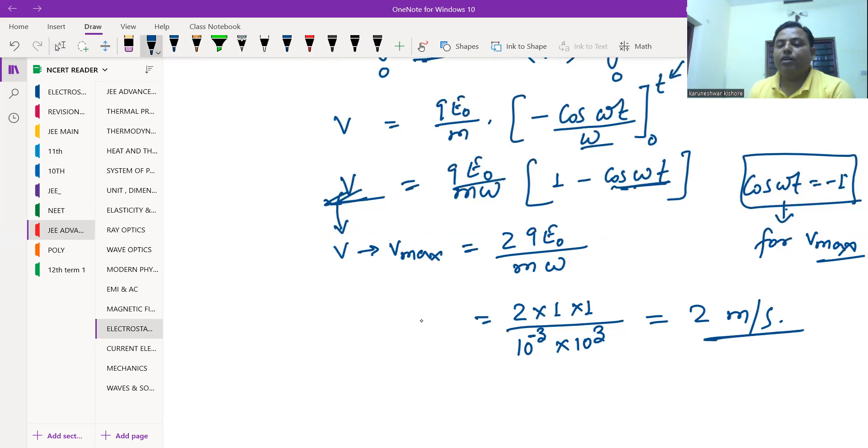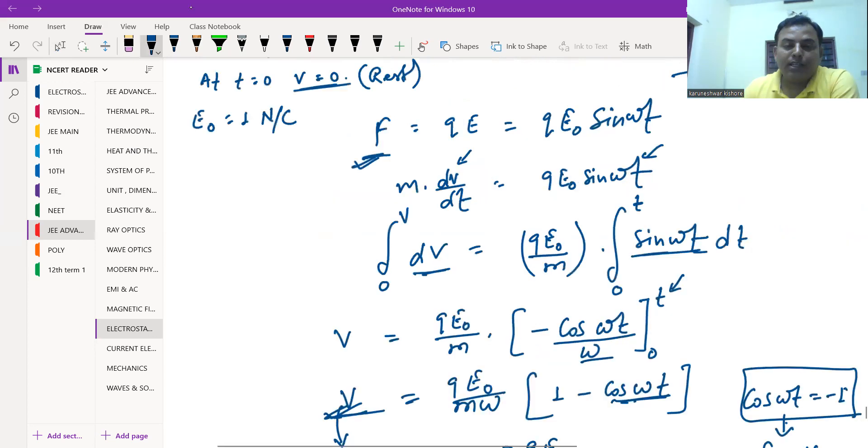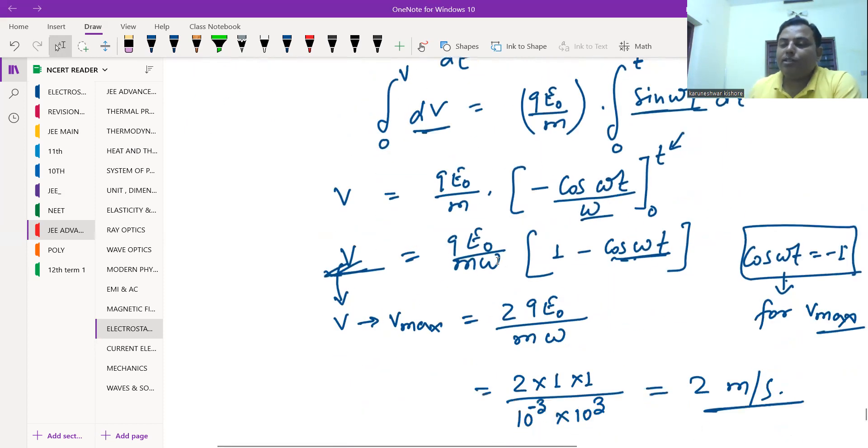So the final result we are getting is 2 meters per second. This will be the maximum speed which the charge particle will gain when it moves in this sinusoidal electric field.